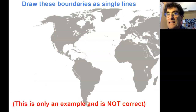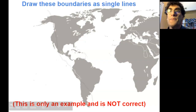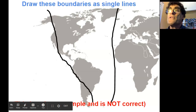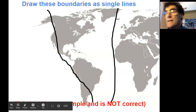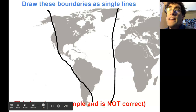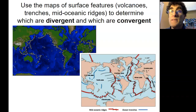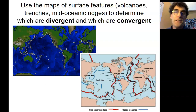Remember, this is an example, not correct. Draw those as straight lines on the map — just use a black pen and put them on the map as best as you can. Then we've got to figure out what kind of boundaries these are. So we're going to look at some other maps: maps of volcanoes, maps of the ocean, and there's even another map. We're going to figure out which are divergent boundaries and which are convergent boundaries.